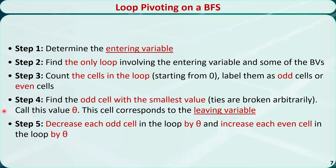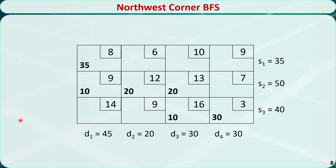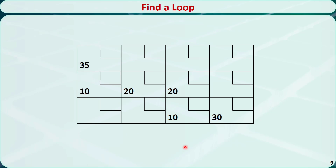Decrease each odd cell in the loop by theta and increase each even cell by theta. After these steps, you will have an improved basic feasible solution. Now I use this example to illustrate how loop pivoting works. Consider this transportation tableau — we obtain a basic feasible solution using the north-west corner method. Since we don't need the cost and supply-demand information during loop pivoting, I remove them so we can focus on the five pivoting steps. For now, let's assume we already know which cell will be the entering variable.